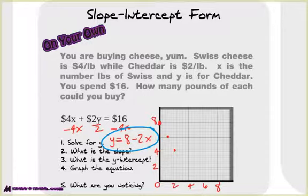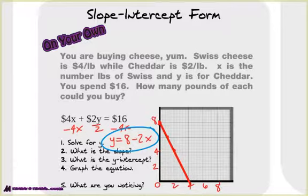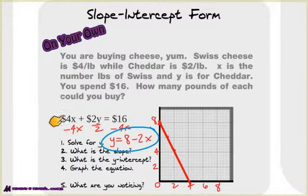Now, is this line going to be continuous or is it going to be discrete? Well, if you think about it, you can buy half a pound of cheddar — I love buying half pounds of cheddar. So yes, we can do that. We're not going to have dots like we did with the concert tickets, where you can't buy half an adult. So what are you noticing? It's definitely easier to graph y equals mx plus b, so it's easier sometimes to write the equation in standard form, but you might want to turn it to slope-intercept to graph it.